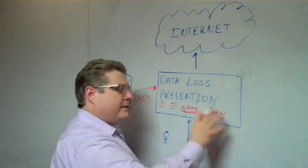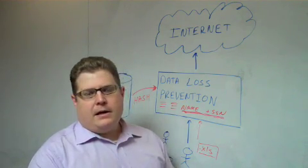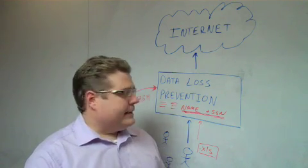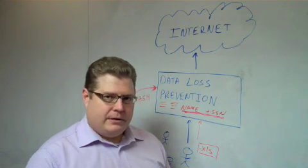Now, that ability to inspect network traffic, webmail, email, blogs, Facebook, Twitter, wikis, all of that type of stuff is referred to as data in motion, data loss prevention.